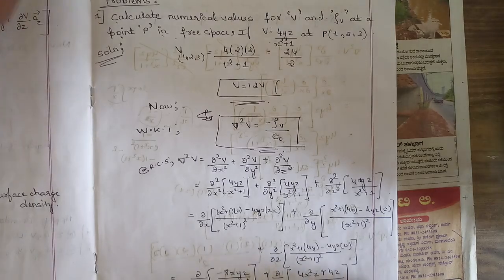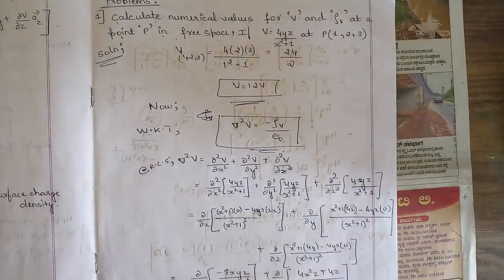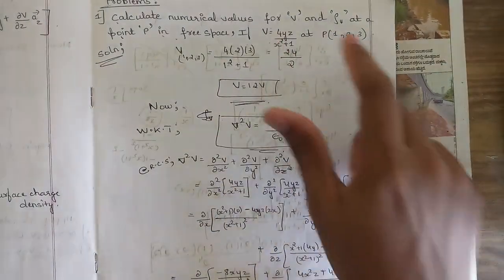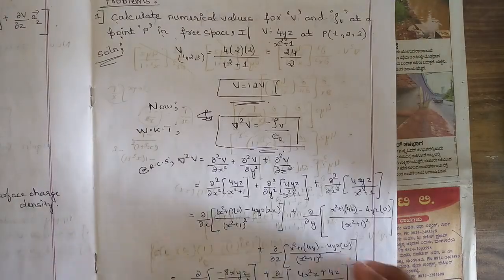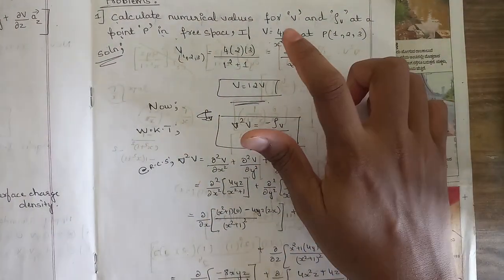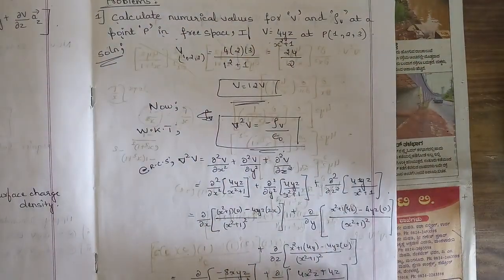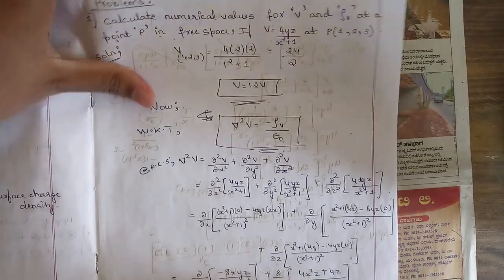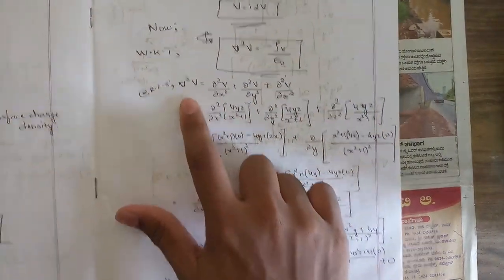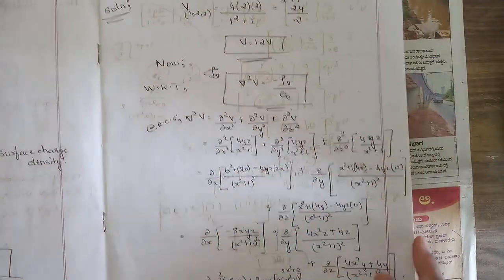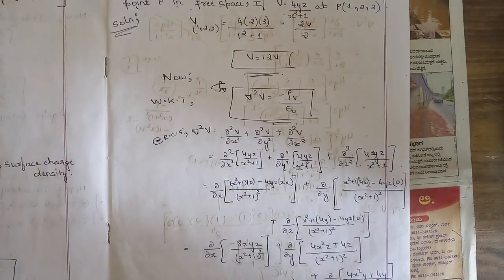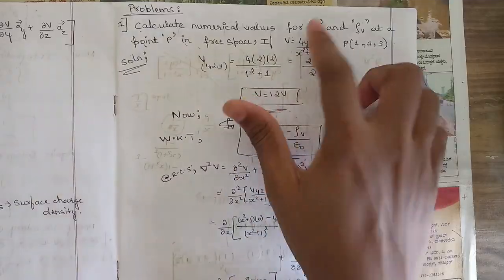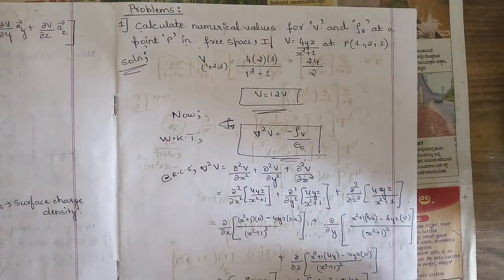From module 3, one problem related to Poisson's or Laplace equation is a must. They would give a value of V and ask you to satisfy the Laplace equation, where del²V = 0. You need to substitute del²V in rectangular, cylindrical, or spherical coordinate systems and solve such that the result del²V = 0 is obtained. This kind of problem is multiple-times repeated.